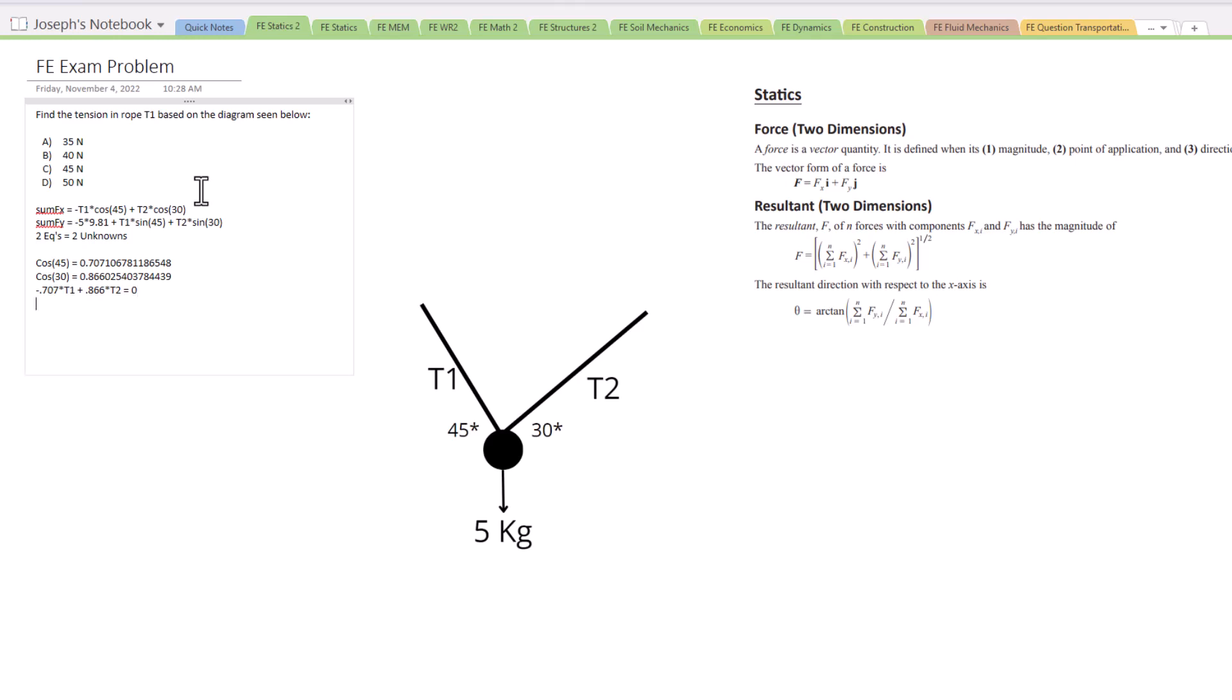So now we want to find what T2. We actually want to solve for T2 so we can use the terms of T1 to then solve for the tension in the rope. So here's what we're going to do here. 0.707 T1 equals 0.866 T2 since we moved to the other side.